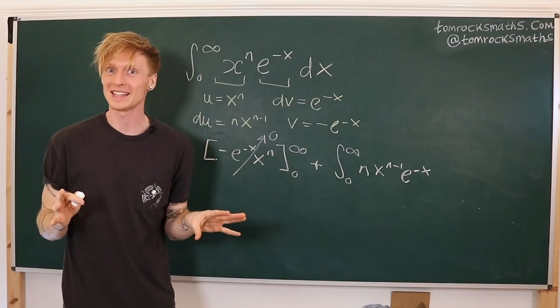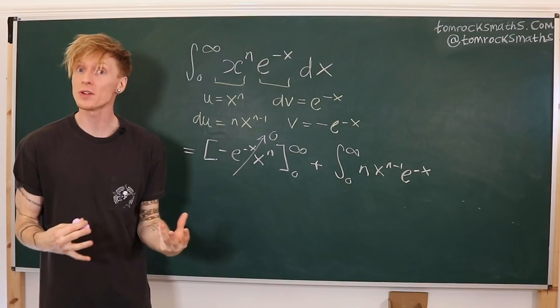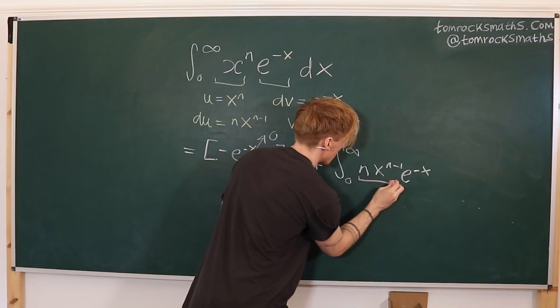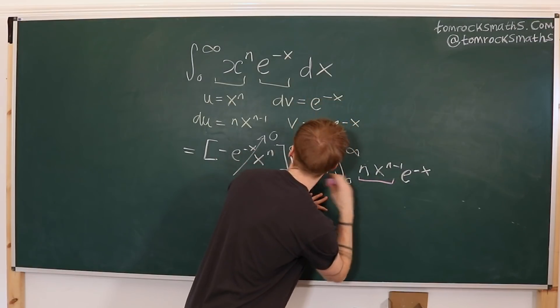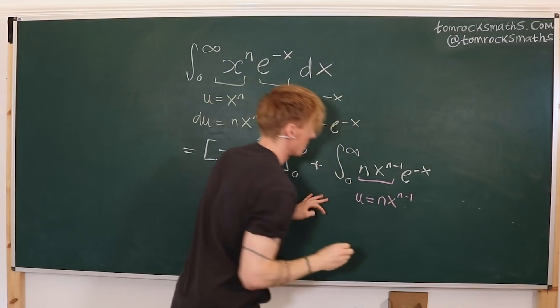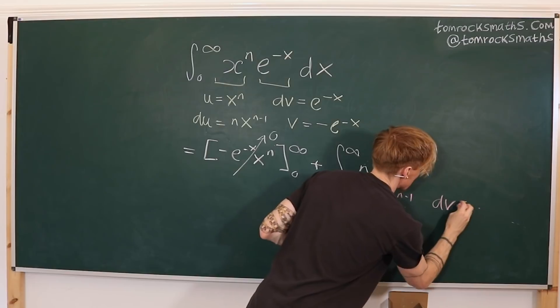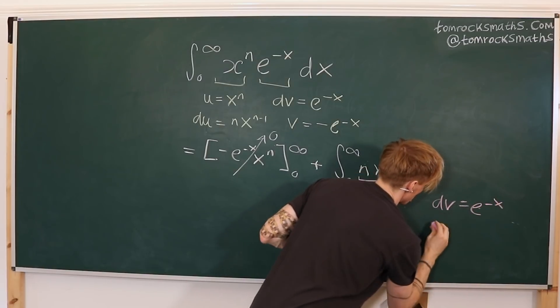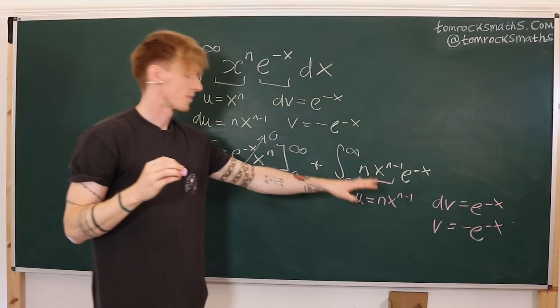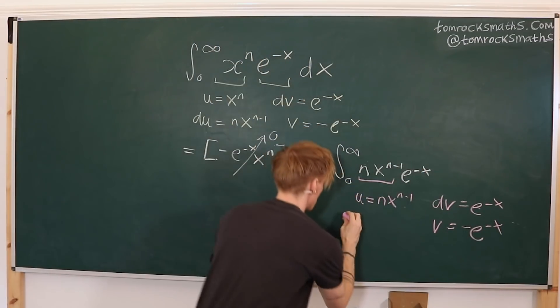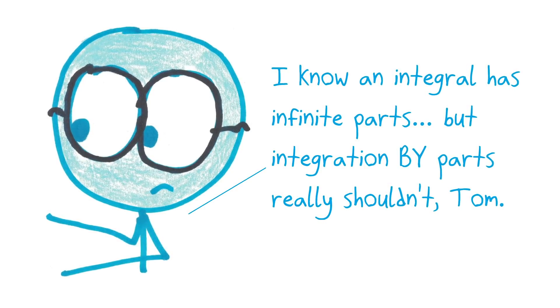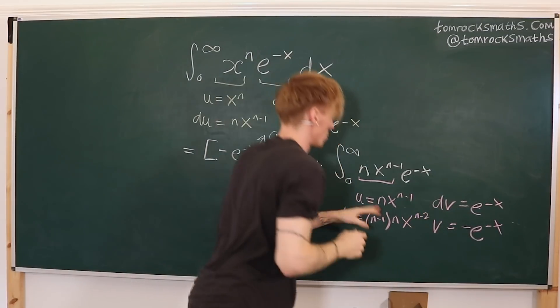So now we want to repeat the same process on our new integral. So if I take n, x to the n minus 1, that will be my u. u is n, x to the n minus 1. My dv is unchanged, so dv is e to the minus x, which means v is unchanged, so minus e to the minus x. And now du, differentiating, I'll get n minus 1 times n, x to the n minus 2.